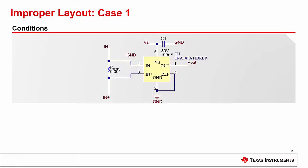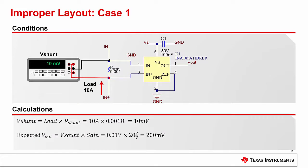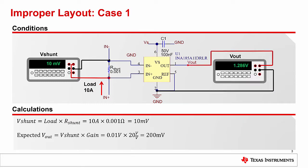Our first case study results from us trying to measure 10 amps across a milli-ohm shunt. Based off of our calculations, we expect the output should be roughly 200 millivolts, reference to ground. However, when we take measurements with our multimeters, we observe something that defies expectation. While our input measurement is 10 millivolts, our output is way off at 1.286 volts.